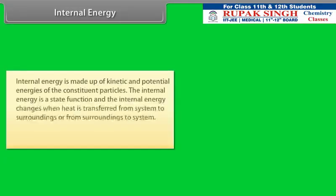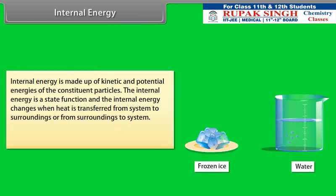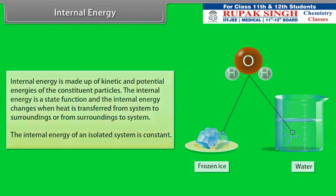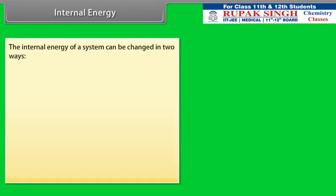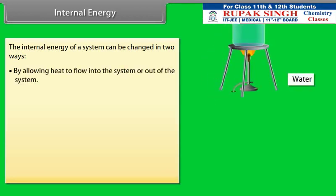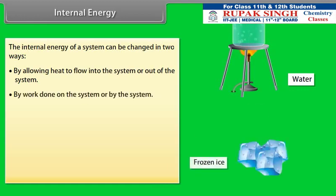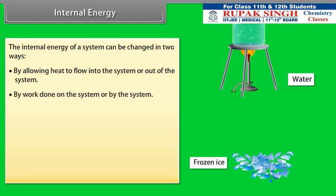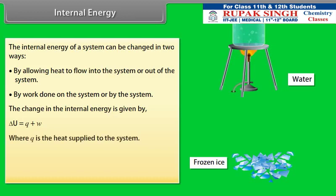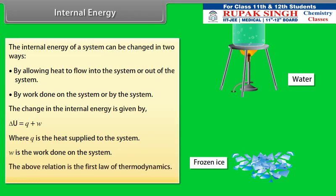Internal energy is made up of kinetic and potential energies of the constituent particles. It is a state function, and it changes when heat is transferred between system and surroundings. The internal energy of an isolated system is constant. It can be changed by allowing heat to flow into or out of the system, or by work done on or by the system. The change in internal energy is given by ΔU = Q + W, which is the first law of thermodynamics.